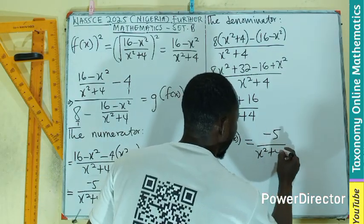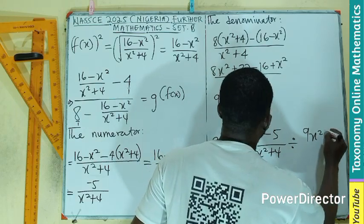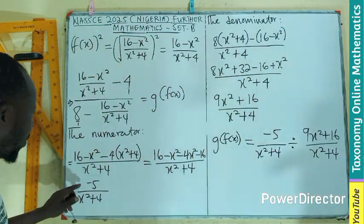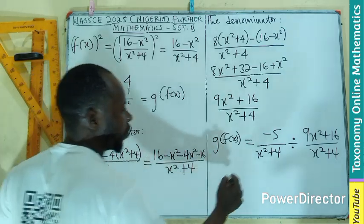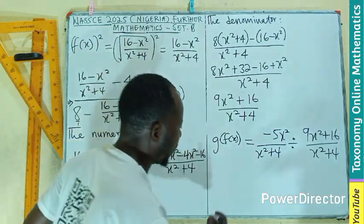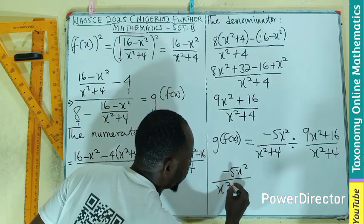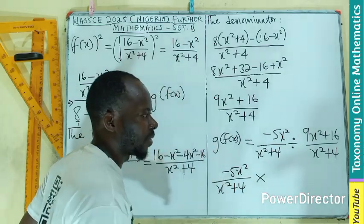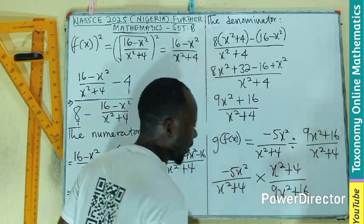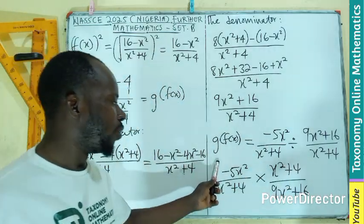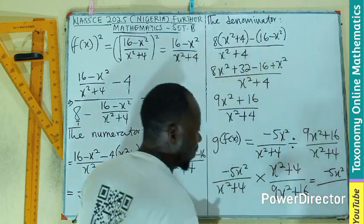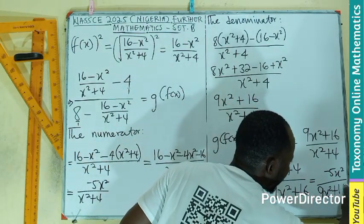So g of f(x) is the numerator negative 5x² over x²+4, divided by the denominator 9x²+16 over x²+4. This is a division of fractions, so we multiply by the reciprocal — flipping the second fraction. The (x²+4) factors cancel, leaving the final answer: negative 5x² divided by 9x² plus 16.